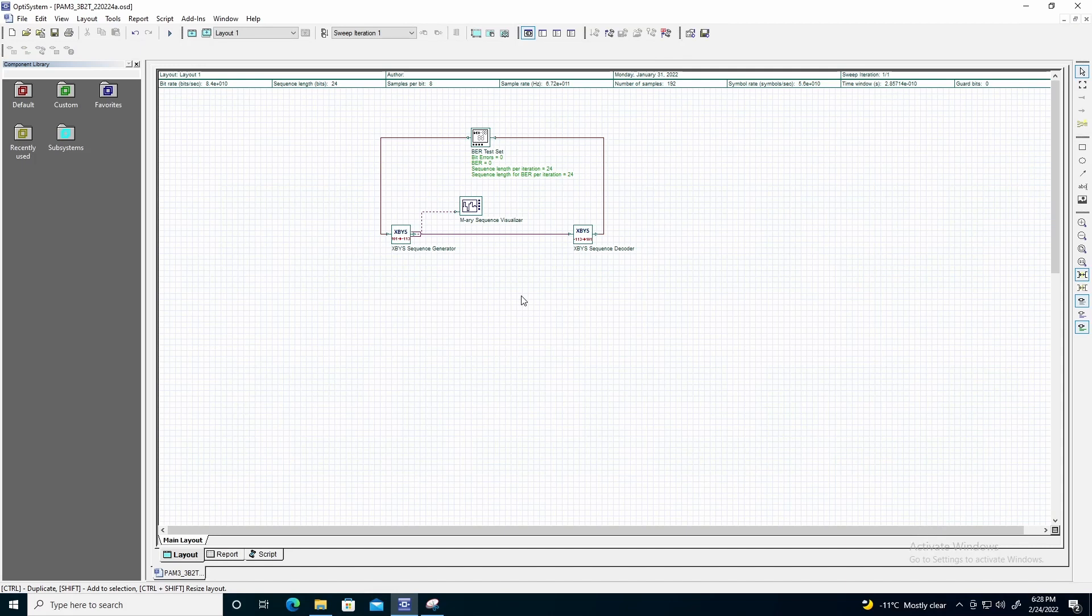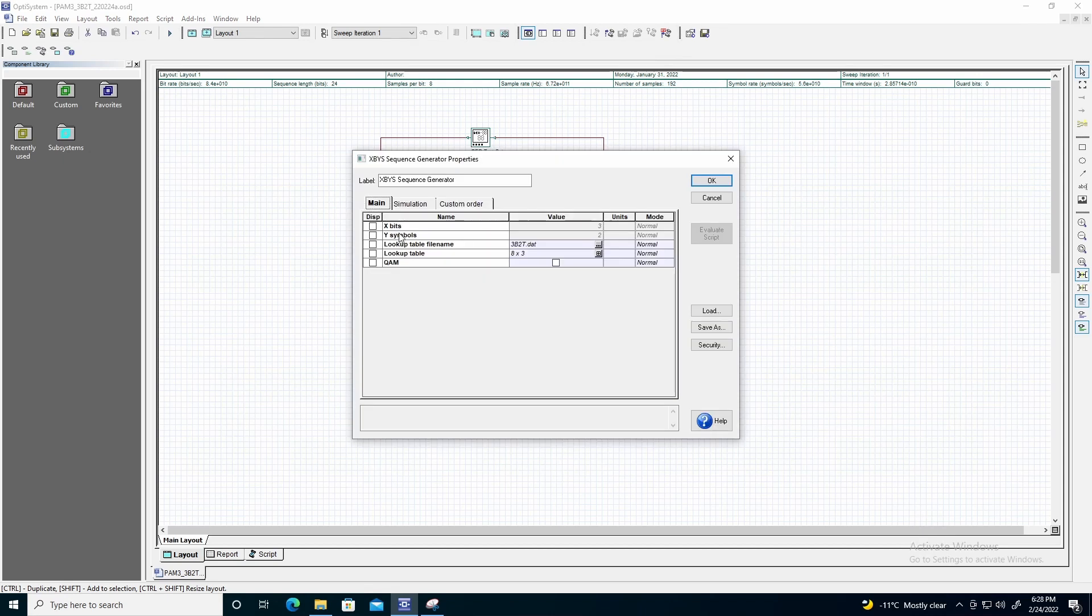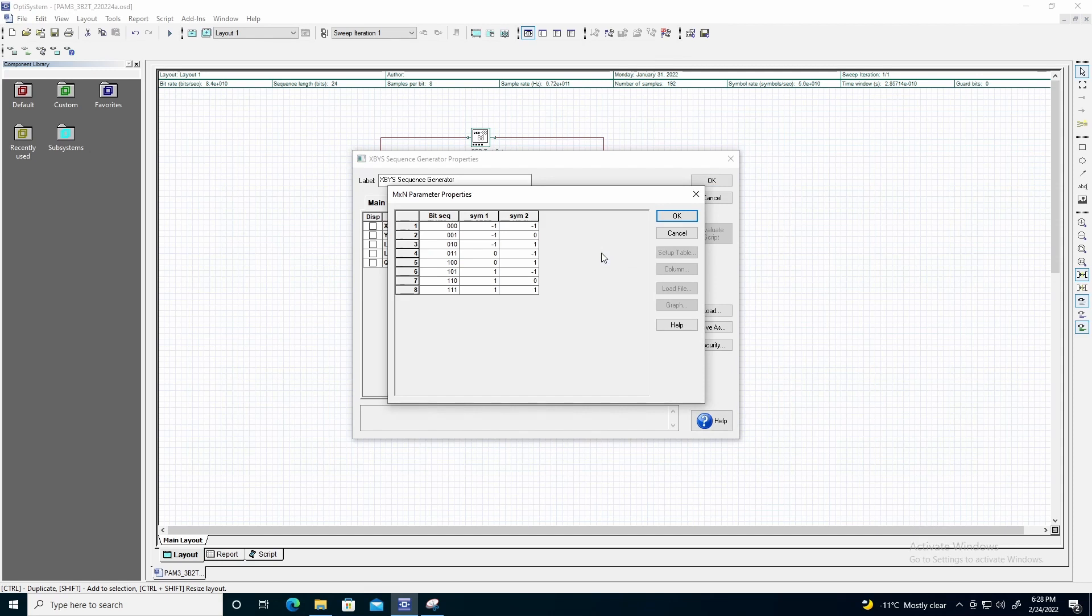This example displays the use of the XBYS sequence generator and decoder components. We first input the lookup table file used, then we can display it with the parameter lookup table. Here, we will use the 3B2T coding scheme.